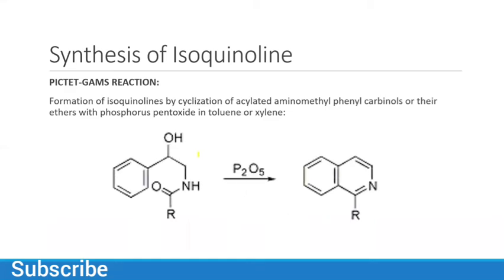Another method is the formation of isoquinoline by cyclization of acetylated aminomethylphenyl carbonate or their ethers with phosphorus pentoxide in toluene or xylene. Phosphorus pentoxide acts as a catalyst, and the final product isoquinoline is obtained.